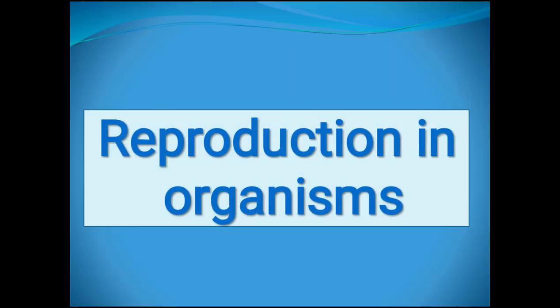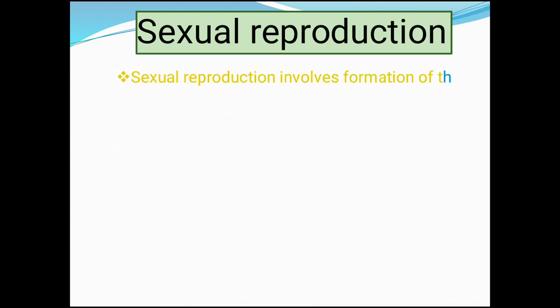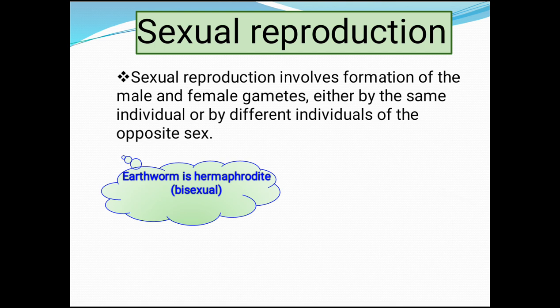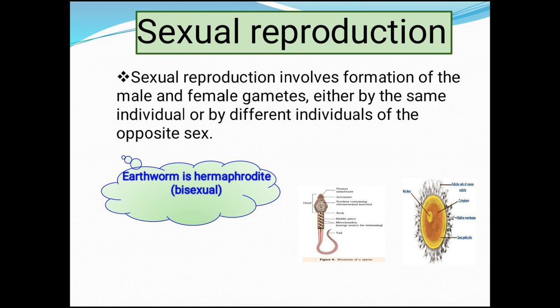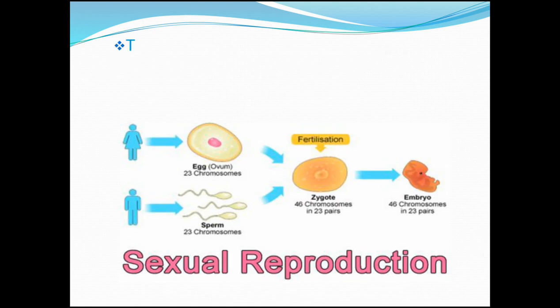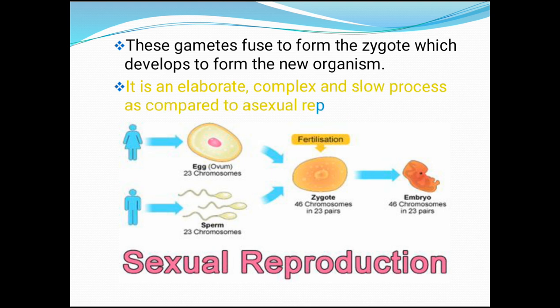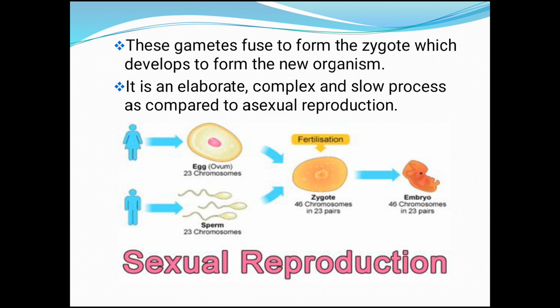In today's class I am going to explain the concept called sexual reproduction. Sexual reproduction involves formation of the male and female gametes either by the same individual or by different individuals of the opposite sex. In case of bisexual organism like earthworm, they can produce both types of gametes. In case of unisexual organisms, male organism produces male gamete and female organism produces female gamete. The produced gametes fuse to form the zygote which develops to form the new organism. Hence, sexual reproduction is an elaborate, complex and slow process as compared to asexual reproduction.